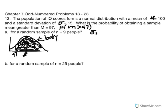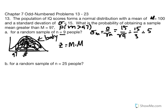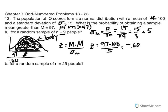To do so, we first calculate our standard error of the mean: standard deviation over square root of n, which is 15 over the square root of 9. We have 9 people in this sample, so that becomes 15 over 3, giving us a standard error equal to 5. Now we can calculate our z-score: z equals the sample mean minus the population mean over the standard error, which is 97 minus 100 divided by 5.